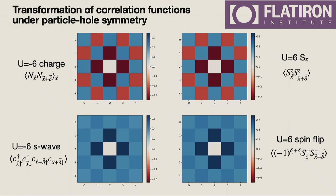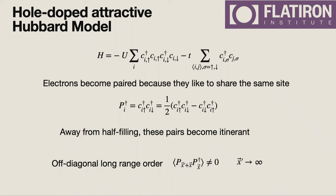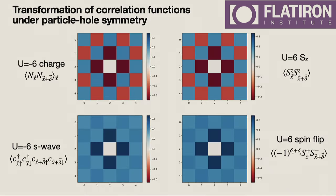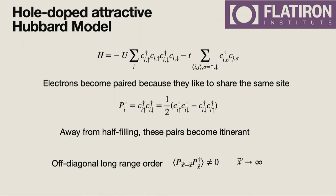Armed with this knowledge, it's worth looking at the hole-doped models. First we'll look at the hole-doped attractive Hubbard model. At half filling there's a degeneracy between charge order and superconducting order. Doping the attractive Hubbard model with holes will split this degeneracy between the charge density wave and superconducting order, and it will favor superconductivity, so we expect to see superconductivity in this model.